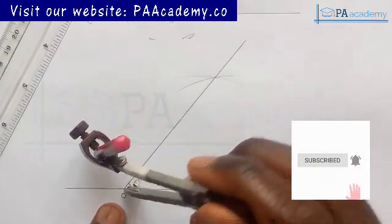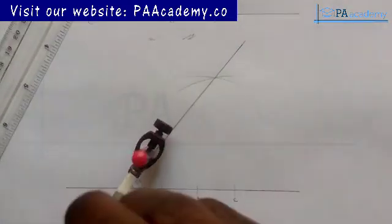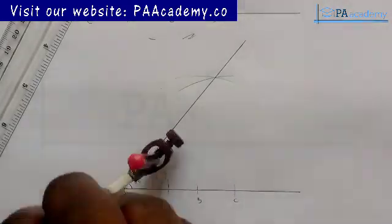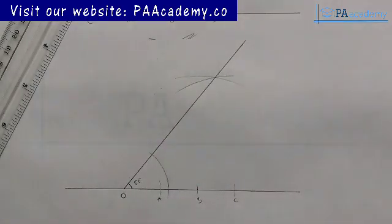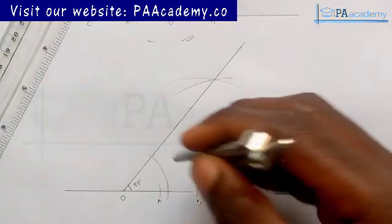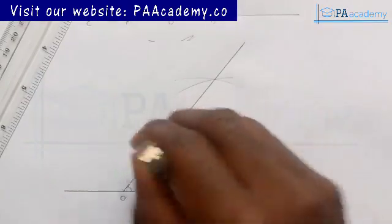From point O, you draw an arc. The point of intersection of that arc we've just drawn on this line and this line.